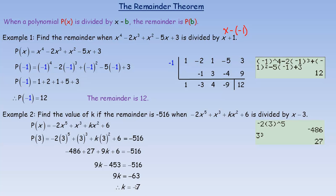So k equals negative 7 when the remainder is negative 516 and the polynomial is divided by x minus 3. The remainder theorem is also useful for factoring, which we'll cover in a lesson called the factor theorem. Since the remainder here is negative 516 — non-zero — we would not say x minus 3 is a factor. When the remainder works out to be 0, then you have a factor, and that's one of the ways to solve polynomial equations.